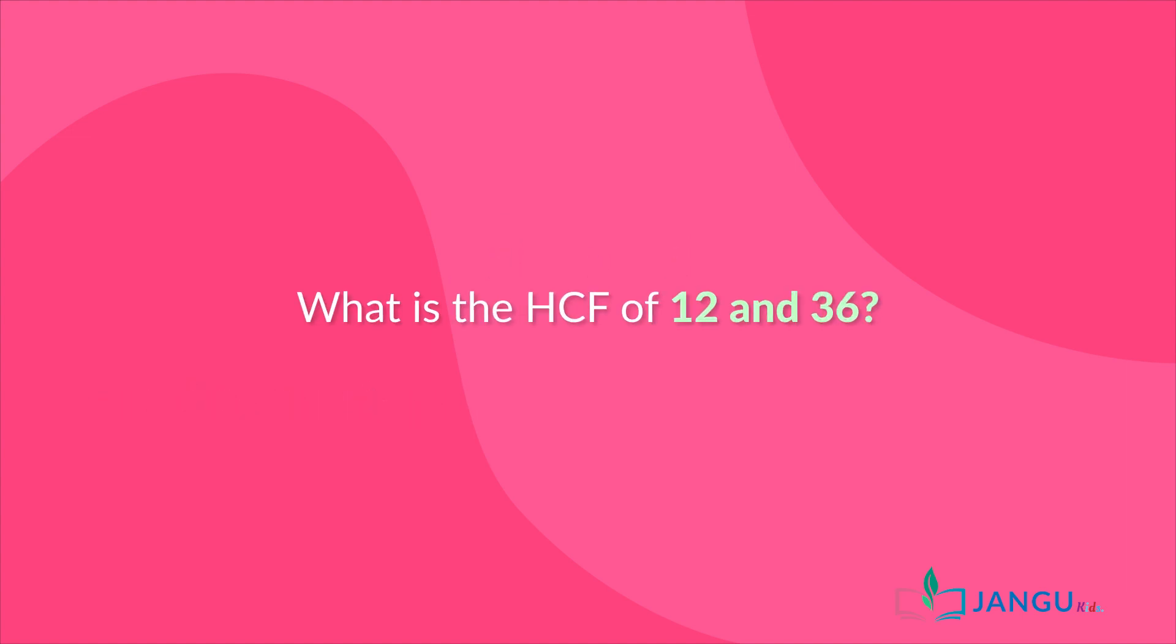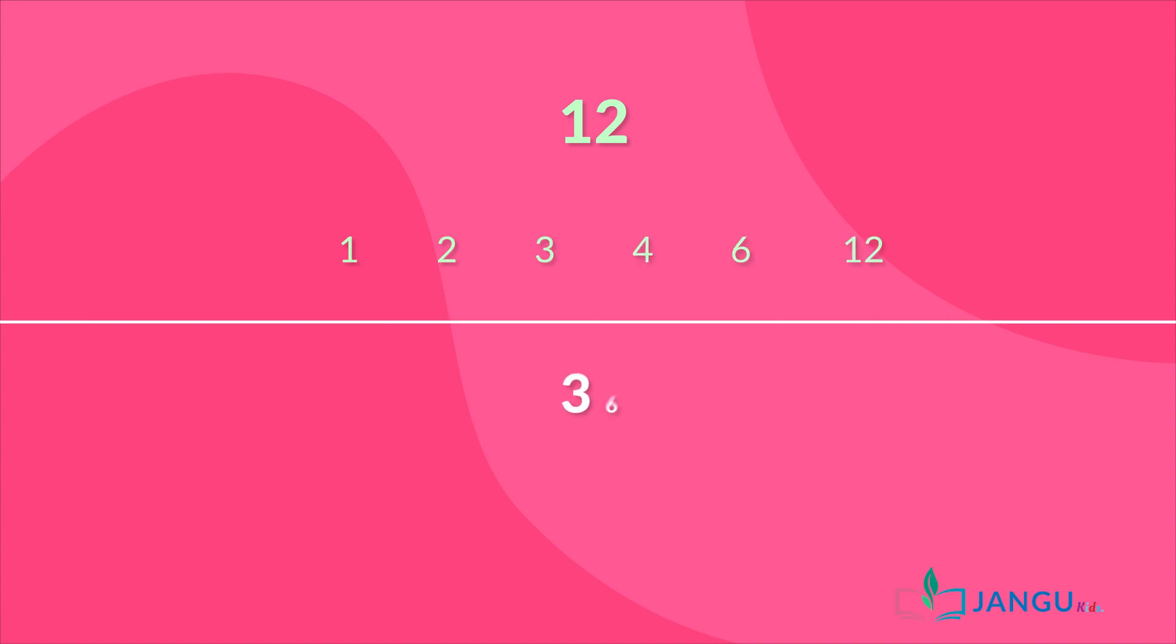What is the HCF of 12 and 36? First, we need to list out the factors of 12 and then those of 36. The factors of 12 are 1, 2, 3, 4, 6, and 12. The factors of 36 are 1, 2, 3, 4, 6, 9, 12, 18, and 36.